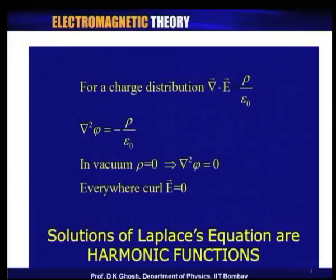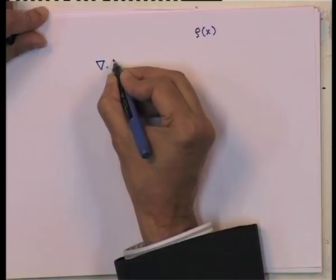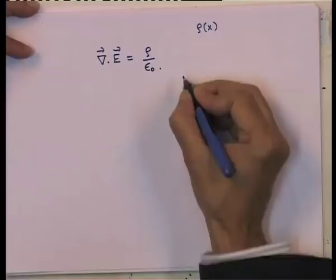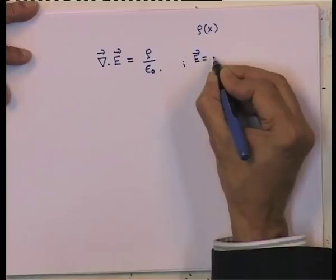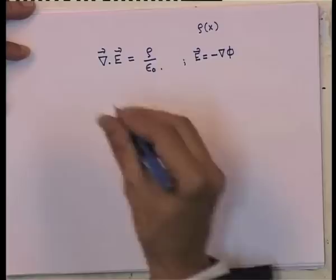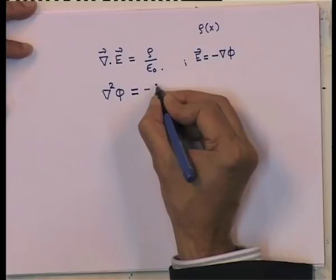If we have a charge distribution given by the density rho at certain points, then according to Maxwell's equations, the divergence of the electric field is given by rho divided by epsilon 0. As we defined the electric field in terms of potential — that is, electric field is given by the gradient of phi, where phi is a scalar function — we can immediately obtain an equation for the scalar potential: del squared phi equals minus rho over epsilon 0. This is known as the Poisson's equation.